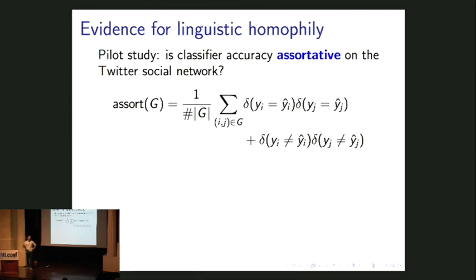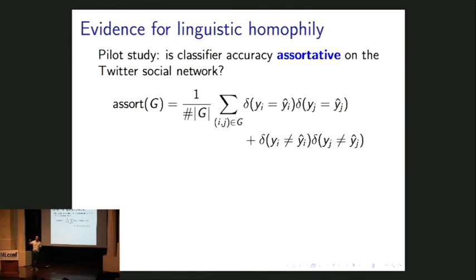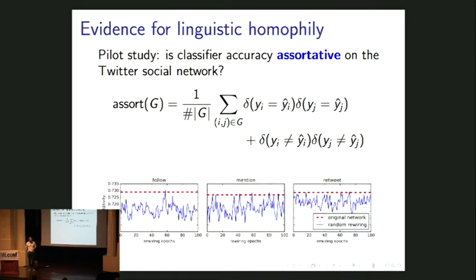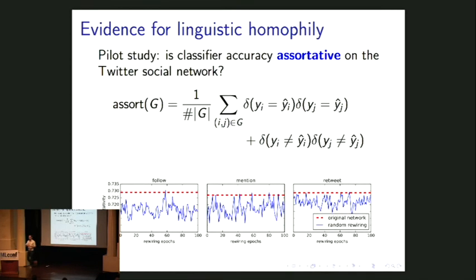Is this actually valid? Homophily in terms of topics is perhaps not so surprising, but homophily in terms of linguistic style is a question. We try to measure whether, if a classifier makes an accurate decision for you, it's more likely to make an accurate decision for your friends — and if inaccurate for you, inaccurate for friends too. We compute a statistic showing how often a classifier is right for both or wrong for both people in a friendship, compared to a random baseline permuting classifier labels. The gap isn't huge, but across three different Twitter networks, you have more similarity in the real network than in randomly rewired networks.